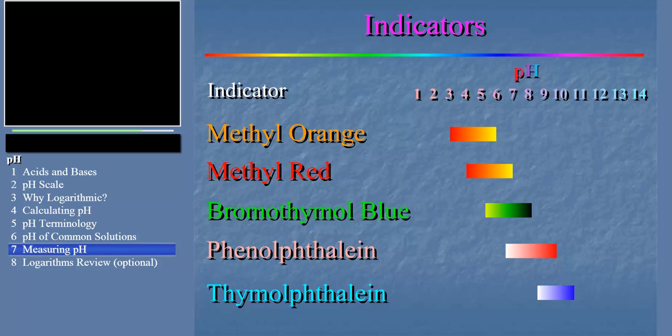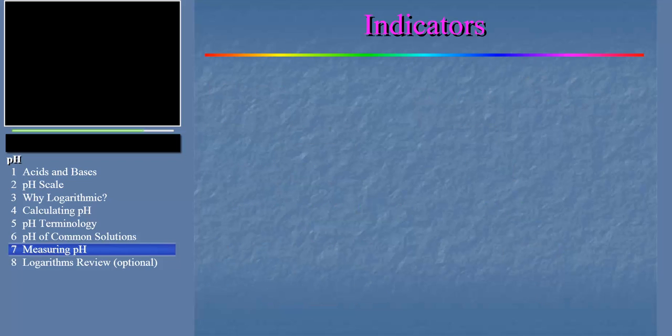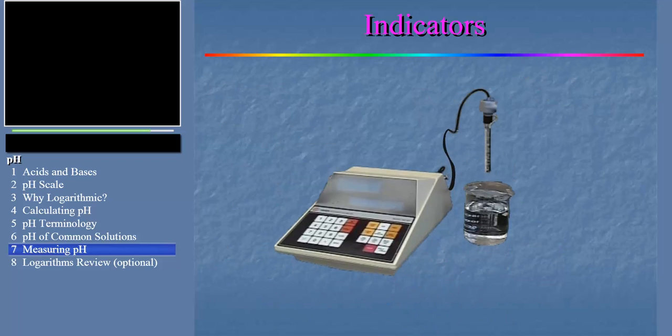A more precise way to measure the pH of a solution is to use a pH meter like the one shown here. To make it work, you stick the probe, called an electrode, into the solution and read the pH on the instrument. It's just that easy. And if you're really nice to your teacher, she just might let you try it.